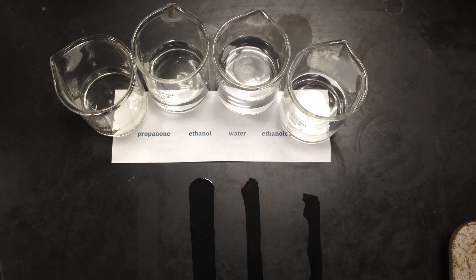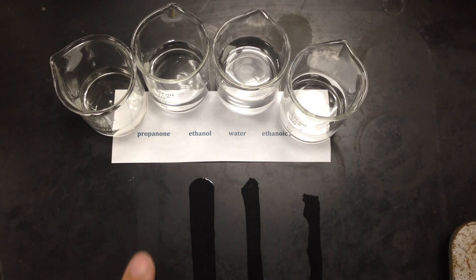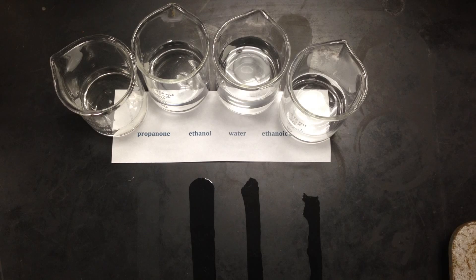So it looks like the first one clearly evaporates the fastest, which means its molecules are escaping into the gas phase faster, and propanone has the highest vapor pressure. So it looks like the fourth one might be evaporating faster, but the problem here is that it may appear that way only because they're actually beading up.